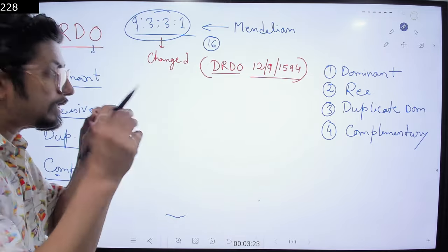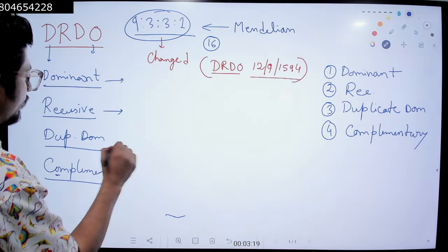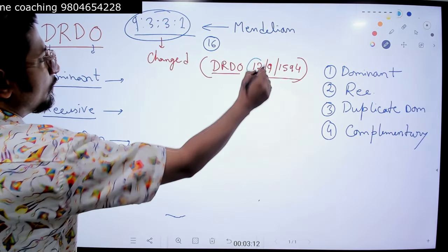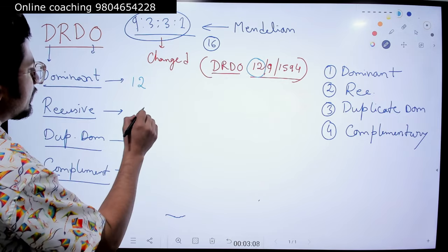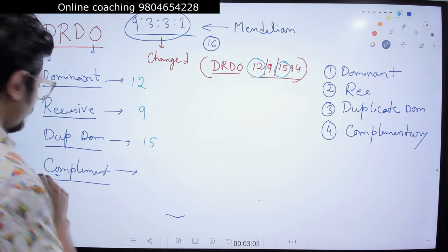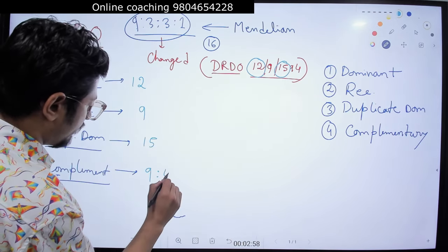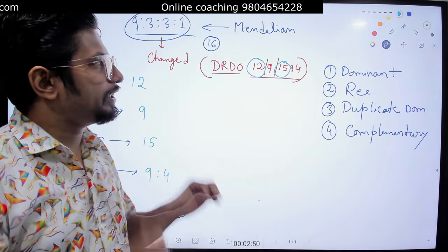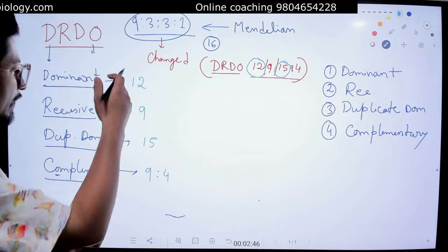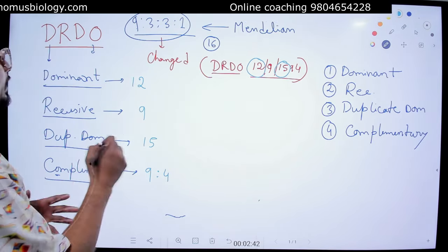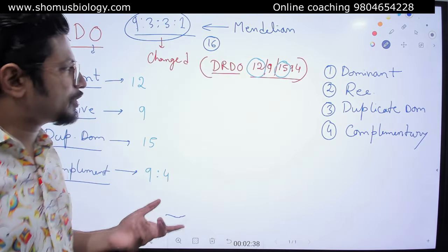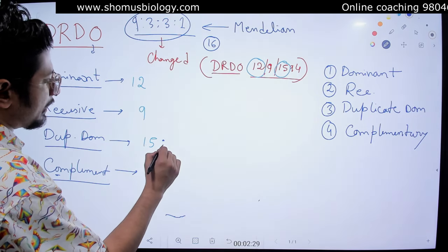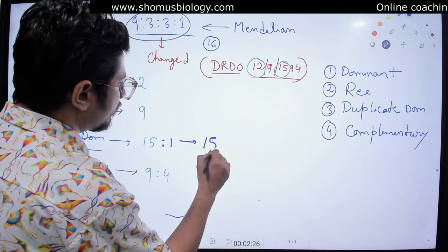Now what about 12-9-15-94? For dominant, recessive, duplicate dominant, and complementary genes we have different ratios. For dominant the ratio starts with 12; for recessive it starts with 9; for duplicate dominant it starts with 15; and for complementary it is 9 then 4. Remember all ratios must add up to 16, so for duplicate dominant: 15 leaves 1 remaining, giving us 15:1.